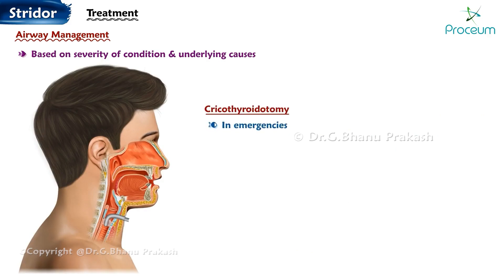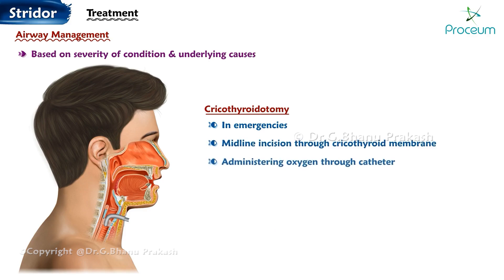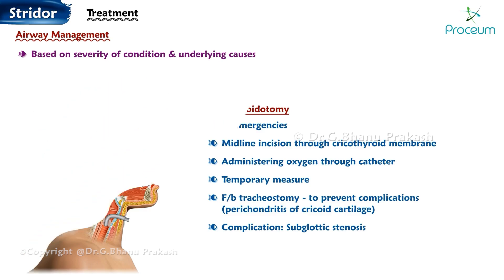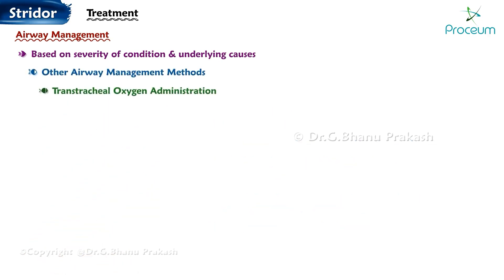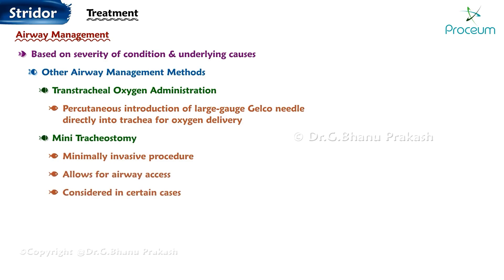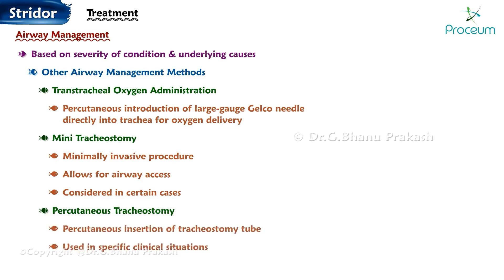Cricothyroidotomy: in emergencies, a cricothyroidotomy can be performed by making a midline incision through the cricothyroid membrane and administering oxygen through a catheter. It is a temporary measure, followed by tracheostomy to prevent complications like perichondritis of the cricoid cartilage. A potential complication is subglottic stenosis. Other airway management methods include trans-tracheal oxygen administration via percutaneous introduction of a large-gauge needle directly into the trachea, minitracheostomy — a minimally invasive procedure allowing airway access — and percutaneous tracheostomy, involving percutaneous insertion of a tracheostomy tube used in specific clinical situations.